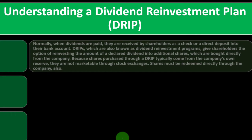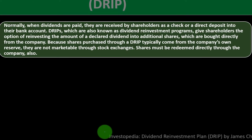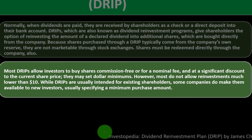Normally when dividends are paid, they are received by shareholders as a check or direct deposit into their bank account. DRIPs — also known as dividend reinvestment programs — give shareholders the option of reinvesting the amount of a declared dividend into additional shares, bought directly from the company. Because shares purchased through a DRIP typically come from the company's own reserve, they are not marketable through stock exchanges and must be redeemed directly through the company.